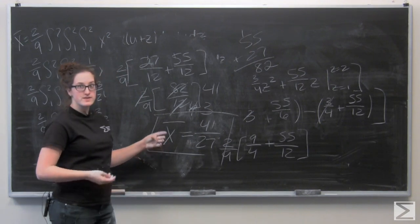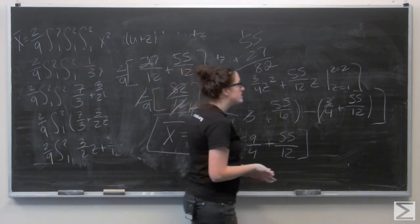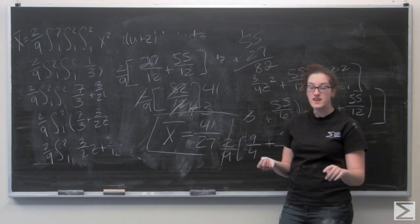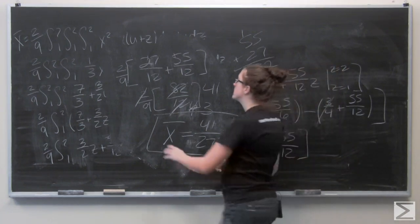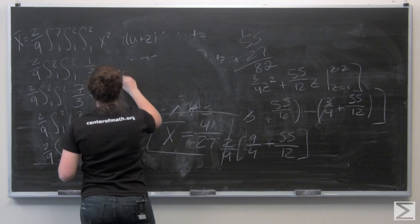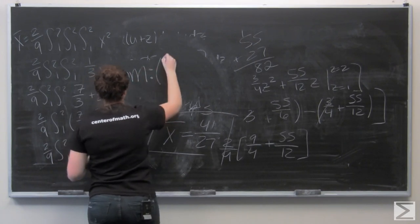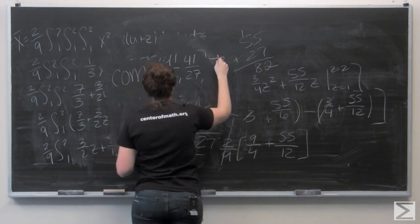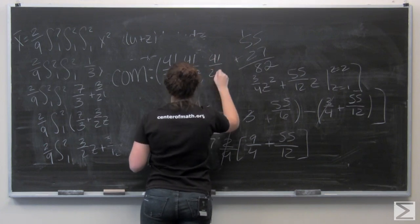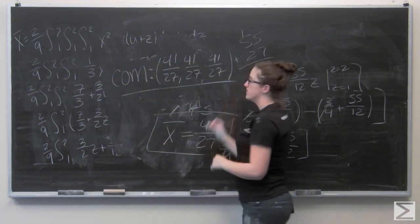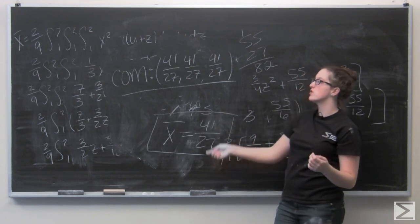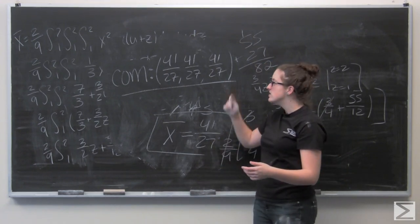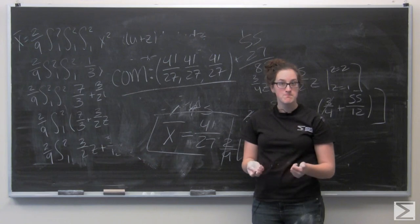That's the x-coordinate for the center of mass. This cube actually has a good amount of symmetry, so we can say that the y- and z-coordinates will also be forty-one over twenty-seven. If you're not sure, you can always go through the integrals for y-bar and z-bar as well — you'll notice a lot of things seem really similar along the way, and you should get forty-one over twenty-seven for each of them.